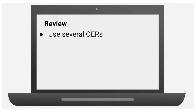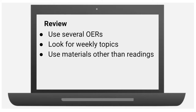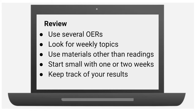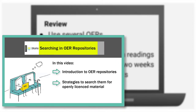To review: you can use multiple OERs to replace a single textbook. Look for resources to match your weekly topic, use materials other than readings, and start small with one or two weeks. Remember to keep track of your searches, synonyms, and results. The next video in the series will demonstrate a search in an OER repository.